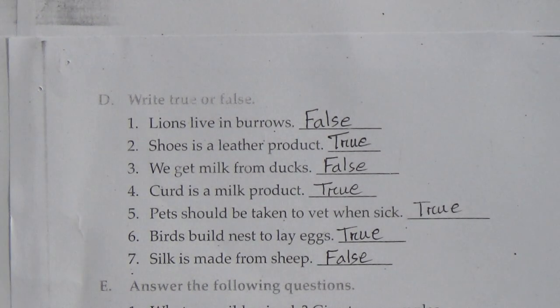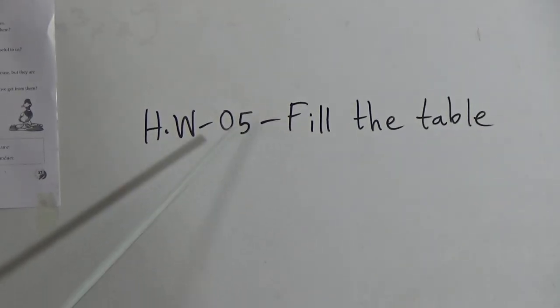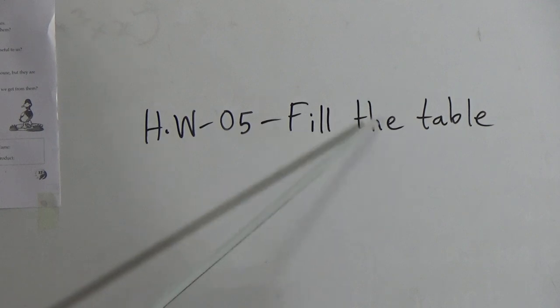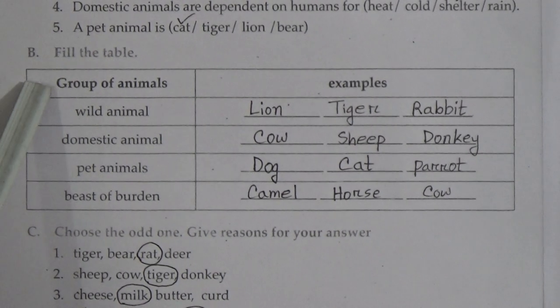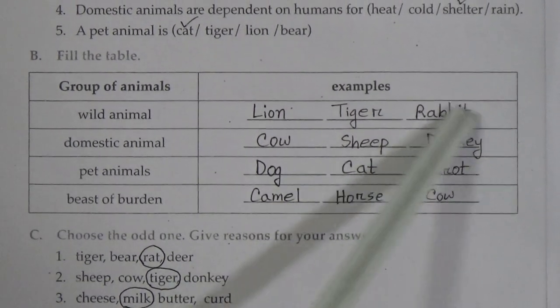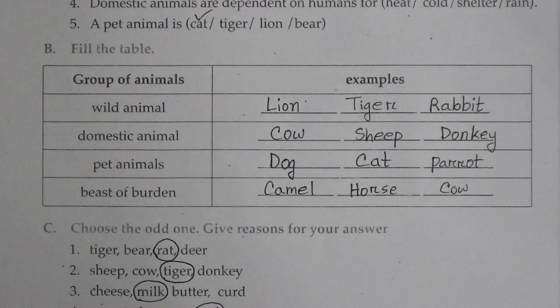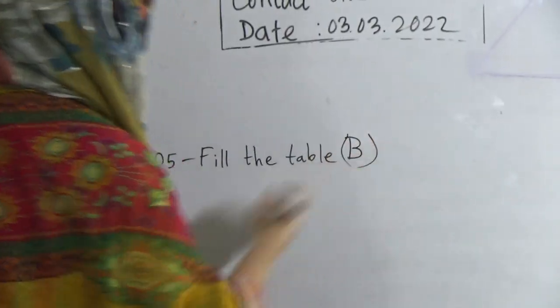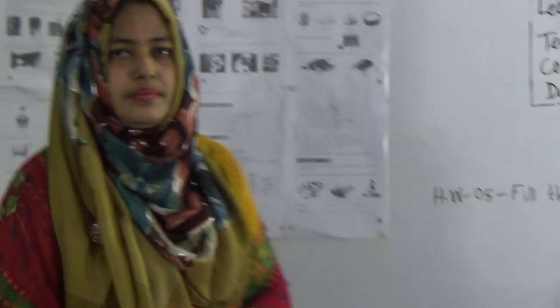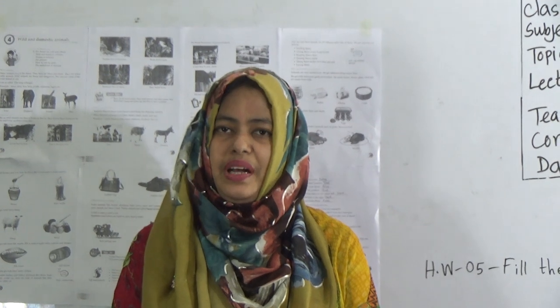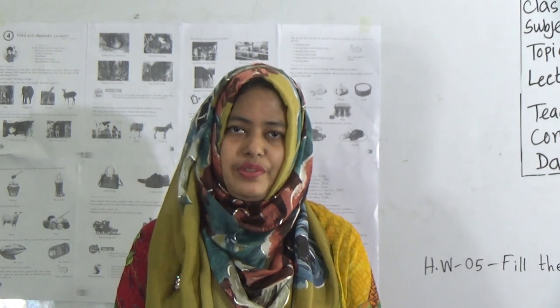Students, I have finished today's topic. Now I will give you your SW — your seatwork will be exercise number B, fill the table. You will do this exercise as your SW in your SW copy. Dear students, I hope you have understood today's topic. Keep practising at home and do your SW in your SW copy.